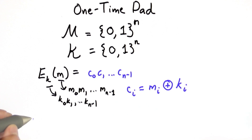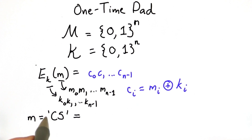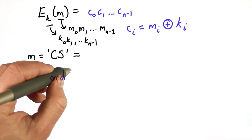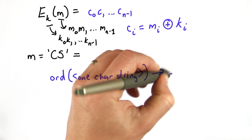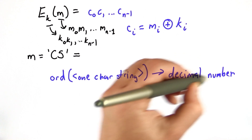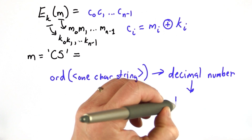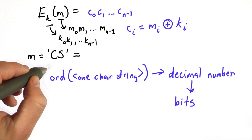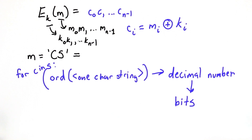Let's try an example. I'm going to give you the ciphertext, the key, and the message. Suppose our message is the string 'cs', but our message space is in bits. The first thing we need to do is convert those characters to bits. We can do that in Python using ord, which takes a one-character string and turns it into a decimal number, and then we convert that decimal number into a binary number for each character in the string.